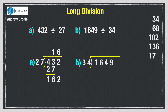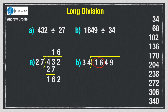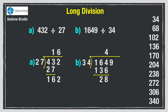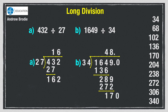Question B: 34 into 1 won't go. 34 into 16 won't go, so we're looking at 164. There are four 34s in 164 — four 34s are 136, so we subtract 136 from 164 to get 28. Bring down the 9. 34 into 289 goes eight times because eight 34s are 272. Subtract the 272 to get 17. Write a decimal point in the question and a matching one on the answer line, then write a zero in the question. Bring down the zero to make 170. Five 34s are 170, so our final answer is 48.5.